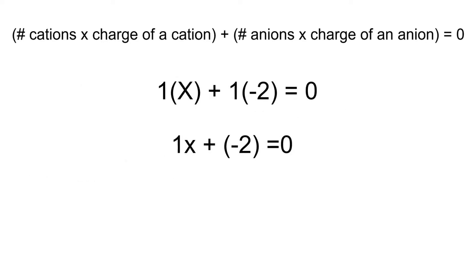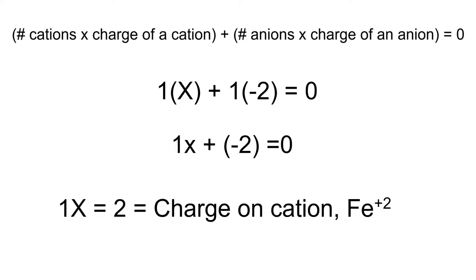Solving for x, we have 1x plus negative 2 equals zero. Add 2 to both sides of the equation and we get x equals positive 2. This means that the charge on our iron is a positive 2.